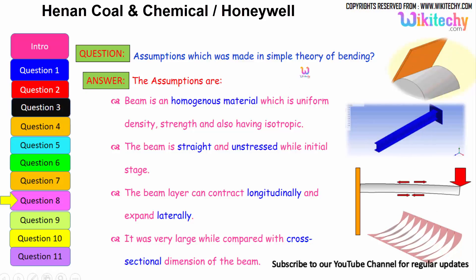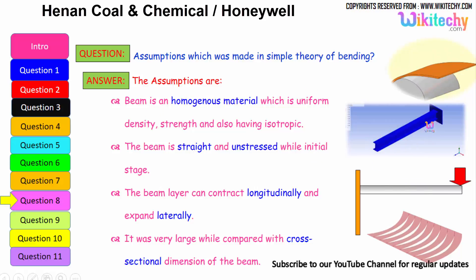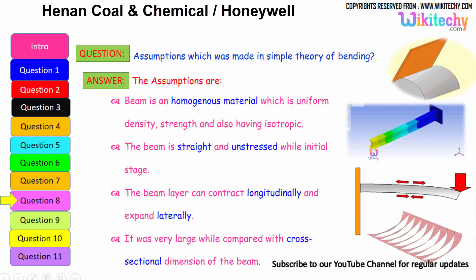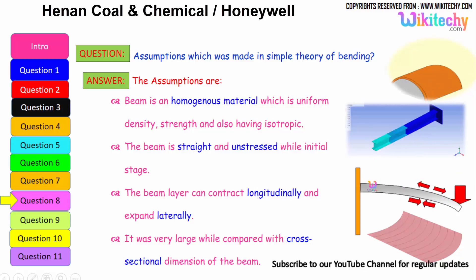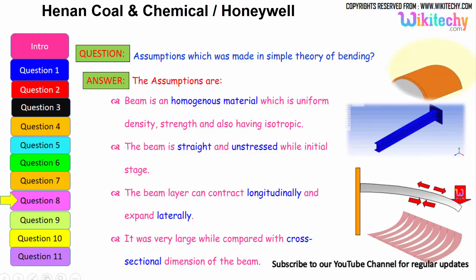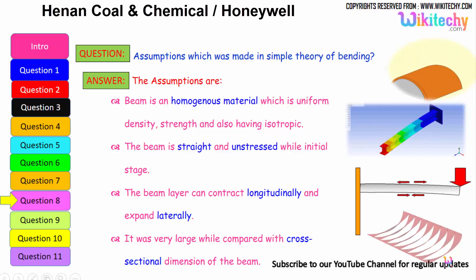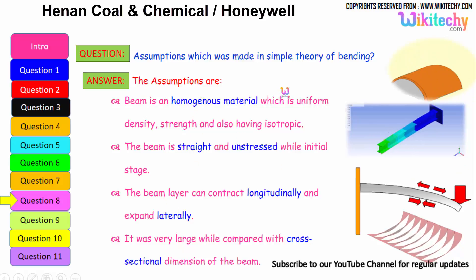What are the assumptions made in the simple theory of bending? The assumptions are: the beam is made of a homogeneous material with uniform density, uniform strength, and isotropic properties. The beam is straight and unstressed in its initial stage. The beam can contract longitudinally and expand laterally. The beam length is very large when compared with the cross-sectional dimension. These are the assumptions for the theory of bending.